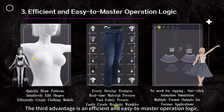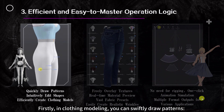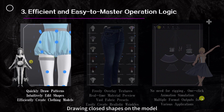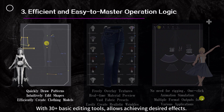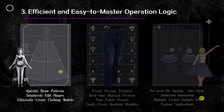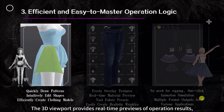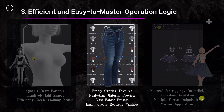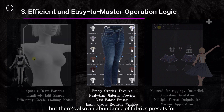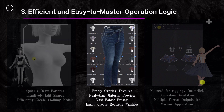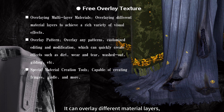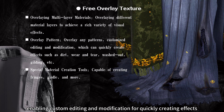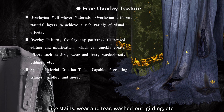The third advantage is an efficient and easy-to-master operation logic. In clothing modeling, you can swiftly draw patterns — drawing closed shapes on the model automatically generates tailored clothing patterns. With 30-plus basic editing tools, you can achieve desired effects. The 3D viewport provides real-time previews of operation results, allowing intuitive editing and showcasing of clothing styles. Regarding output effects, you can freely overlay textures with real-time previewing of material effects. It allows overlaying any patterns, enabling custom editing for quickly creating effects like stains, wear and tear, washed out, gilding, etc.